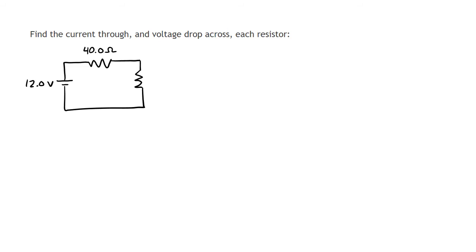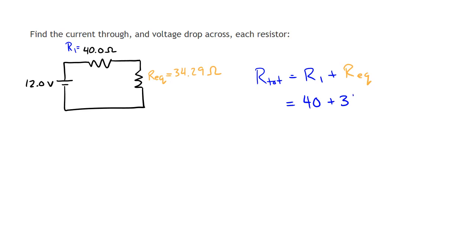Now that I've found the equivalent resistance of the two parallel resistors R2 and R3, I can redraw my circuit with those two replaced by a single equivalent resistor of 34.29 ohms. We still have R1, the 40 ohm resistor. After redrawing, the circuit is basically two series resistors: R1 at 40 ohms and the equivalent resistance of 34.29 ohms. We find the total resistance by adding R1 plus REQ.